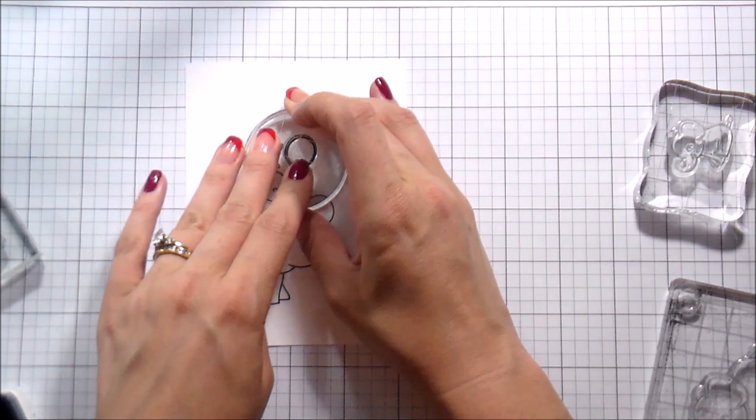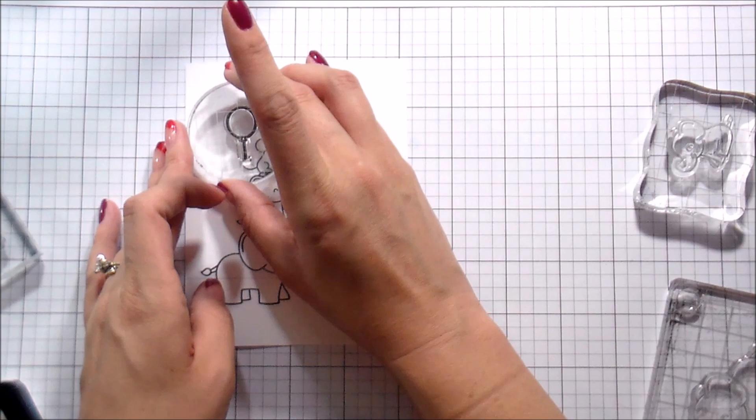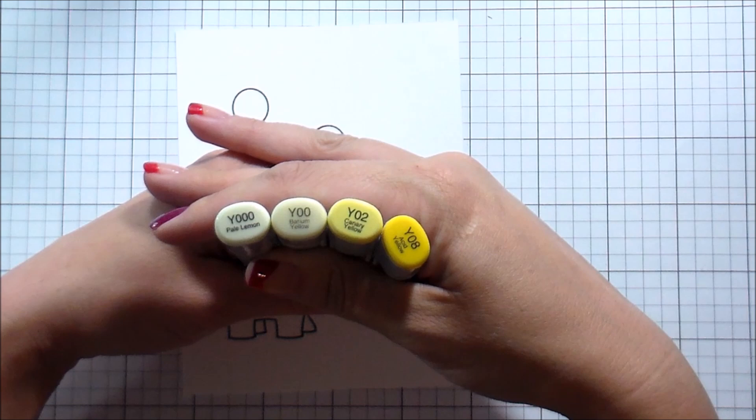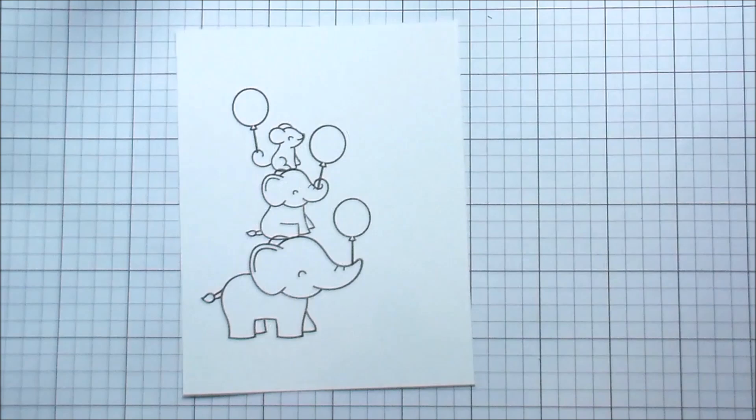I stamped all the little characters and I'm going to go ahead and give each of them a balloon since this is going to be a birthday party card. So now we're just going to get right into the technique. Basically, this technique is so simple, you cannot mess it up and it really gives a fun little look to the background.